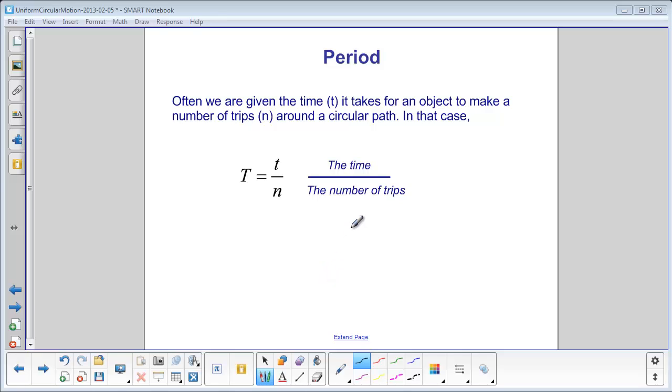So to find period, you take the time it takes an object to move around a circle for a number of trips, and divide it by the number of trips. The time it takes is represented by a lowercase t, and the number of trips is represented by a lowercase n. Since period is a specific amount of time, it is represented by a capital T.